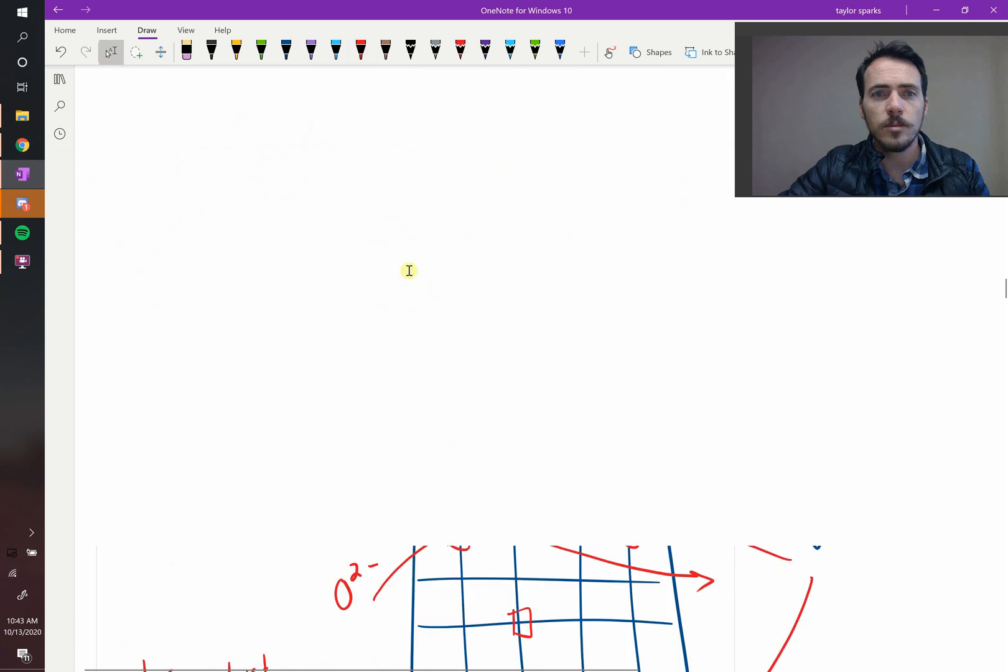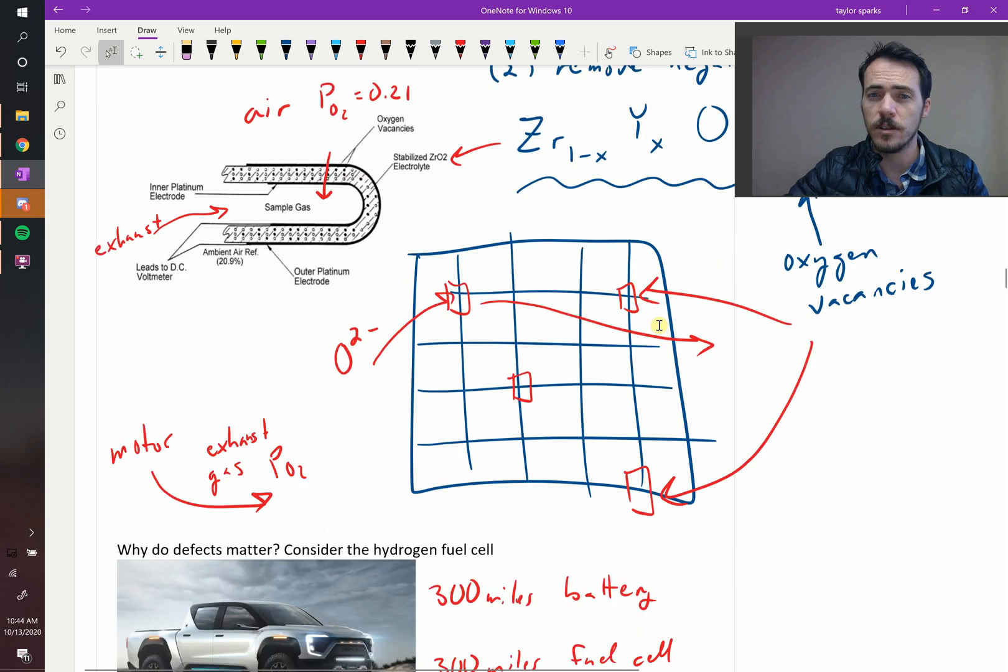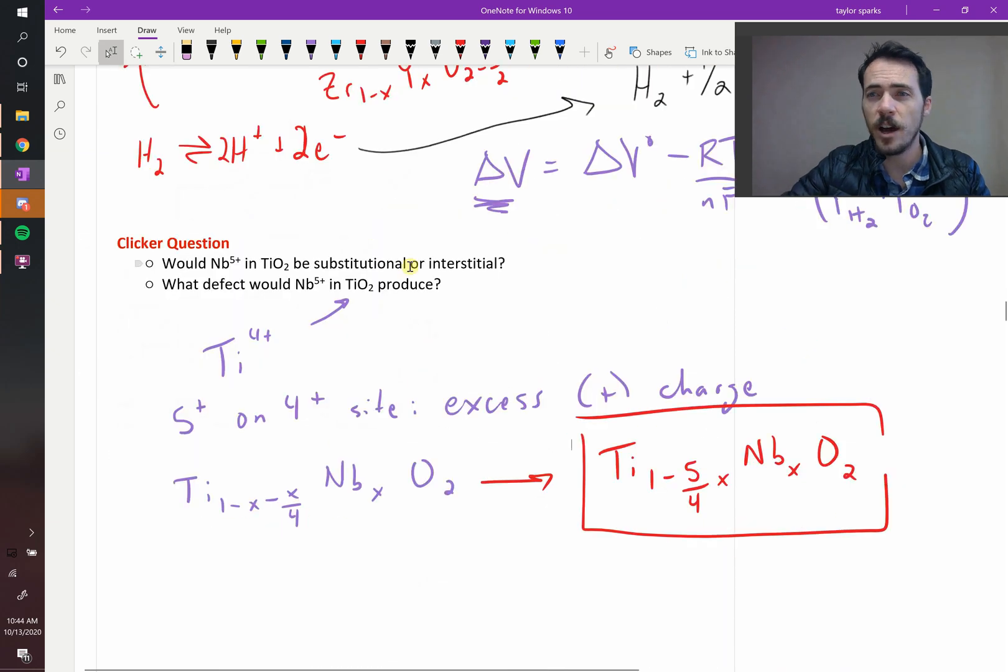So whereas when we doped it with something that had less charge than normal, a 3 plus on a 4 plus site, it created an oxygen vacancy. This time, since we put something that has a higher charge, 5 plus on a 4 plus, it created a cation vacancy. We're ending up with cation vacancies. So that's an example, a couple examples of alleovalent substitution and how we can use them as material scientists to end up with structures that have properties just like what we're looking for.